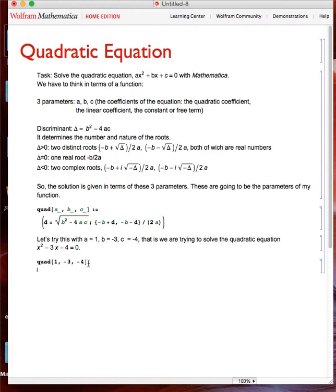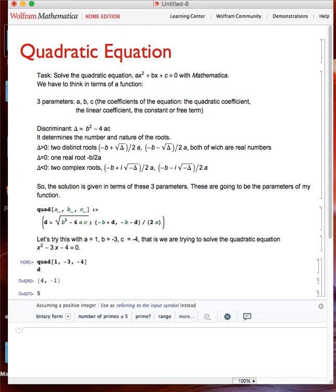Let's evaluate the discriminant. Since the discriminant is positive, I'm expecting two real roots. It's minus 1 and 4.